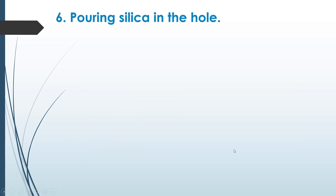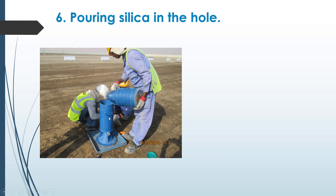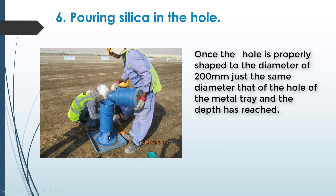Number six: pouring silica in the hole. Once the hole is properly shaped to a diameter of 200 mm — the same diameter as the hole of the metal tray — and the required depth has been reached, place the pouring cylinder onto the metal tray. Pour the silica inside the pouring cylinder. Make sure no one holds or touches the pouring cylinder as that may cause vibration.